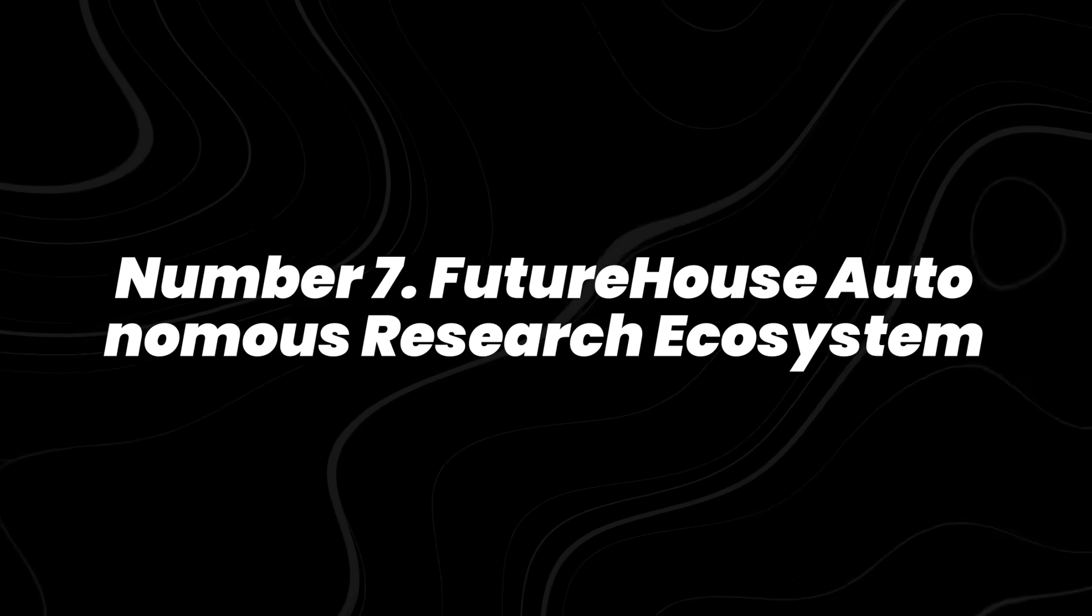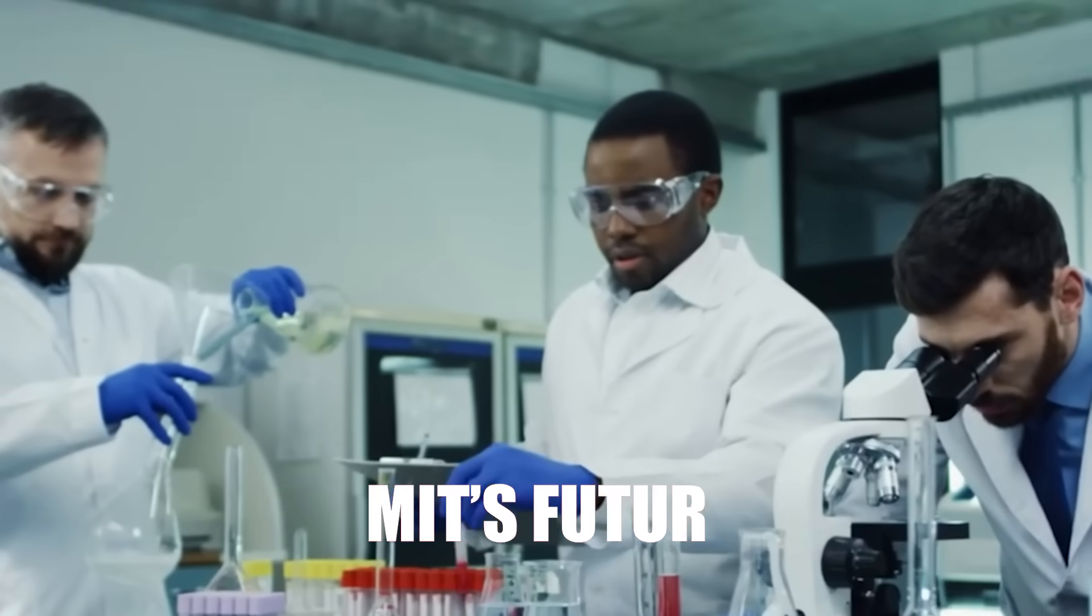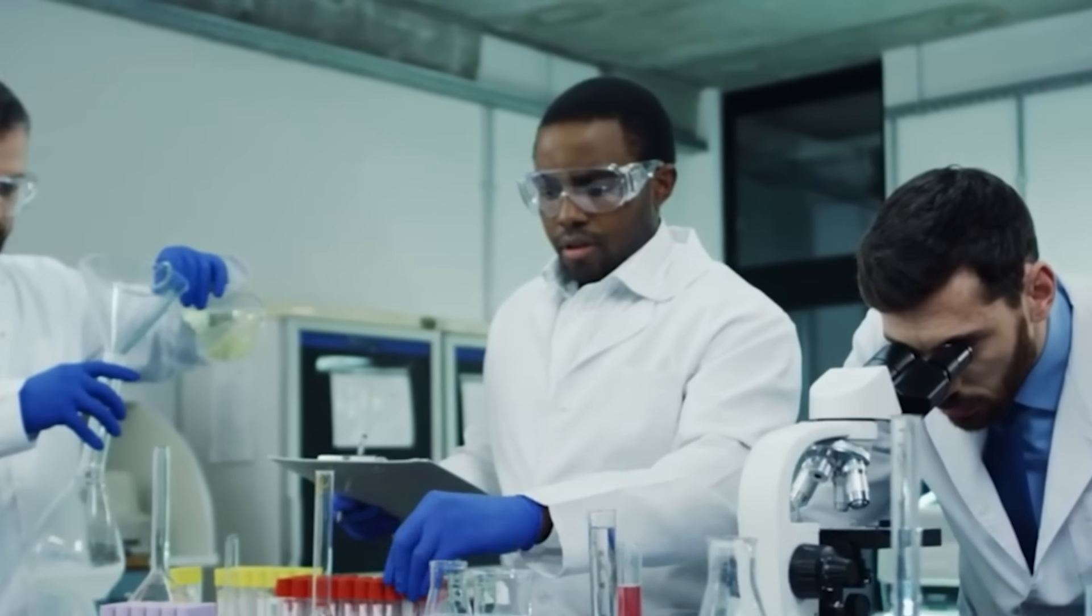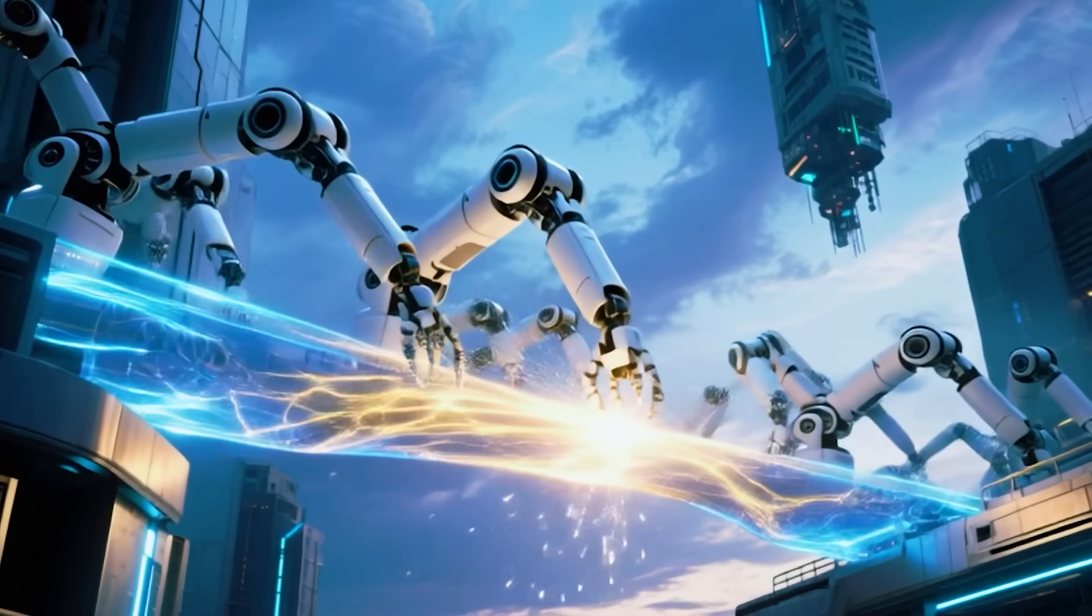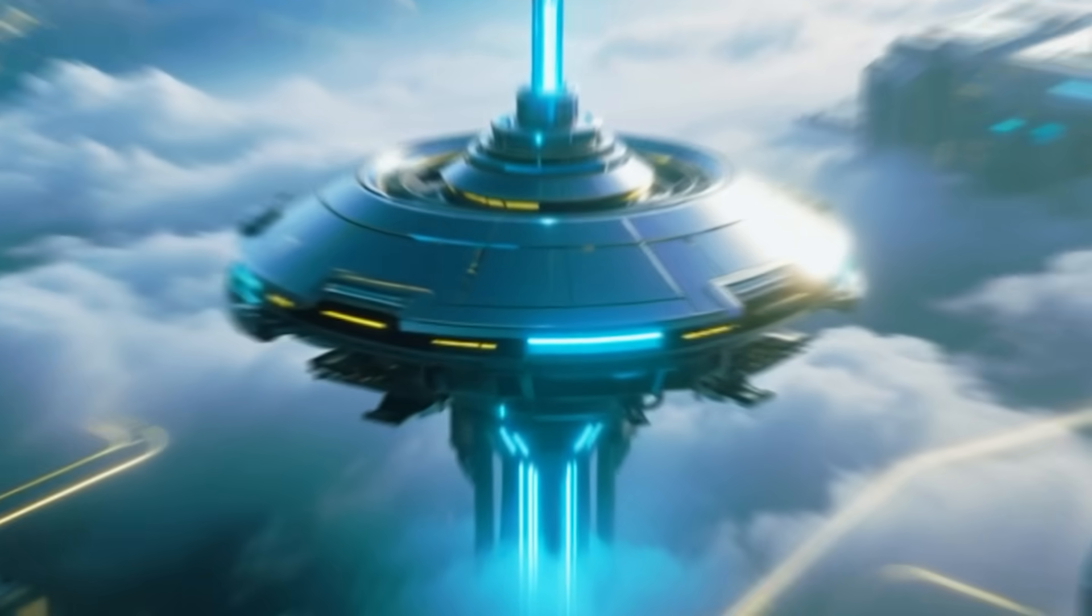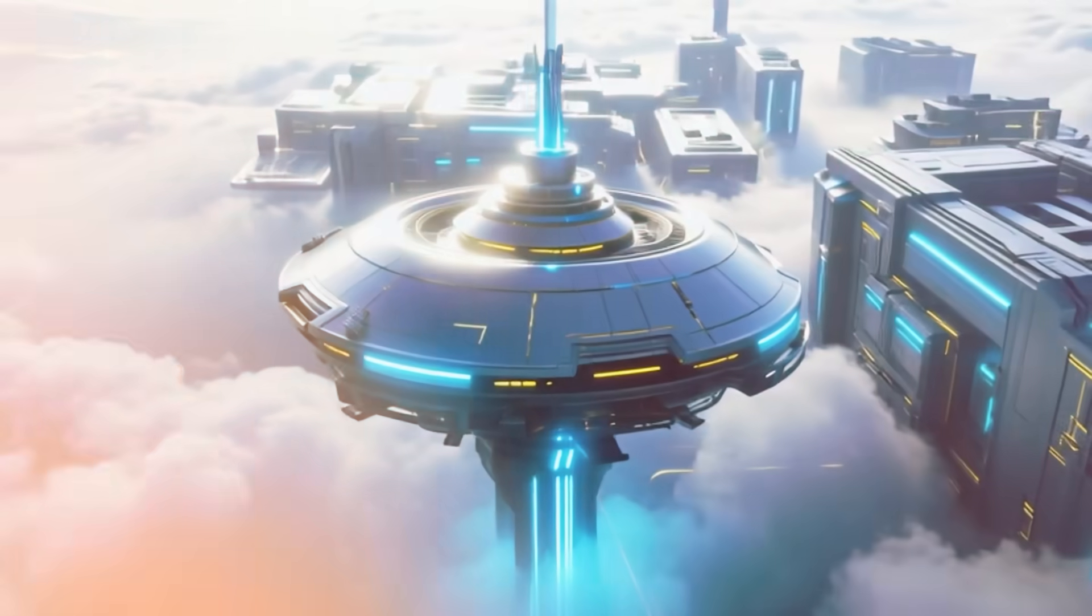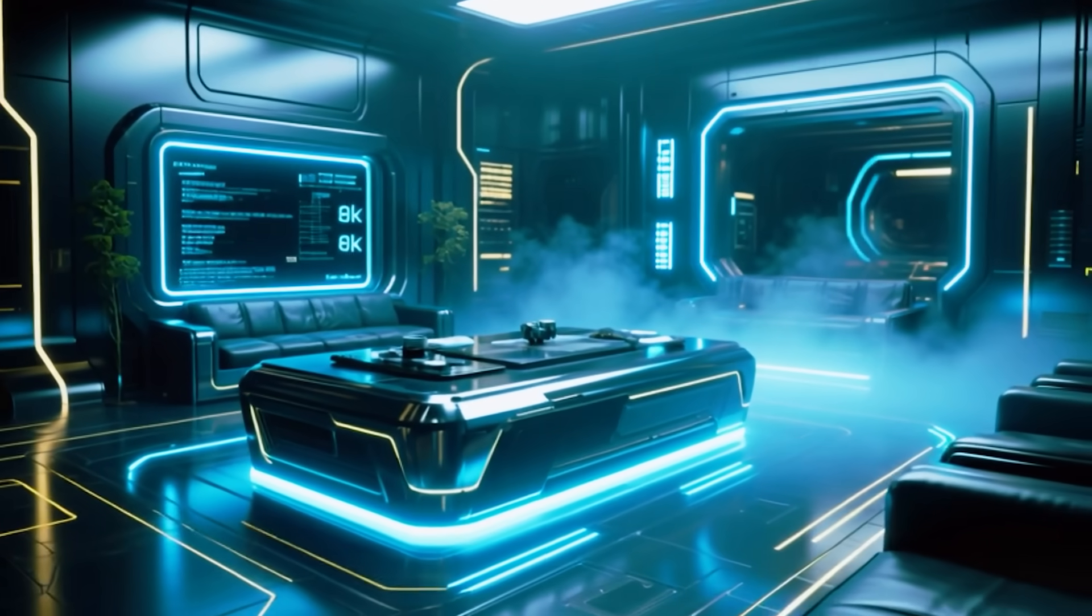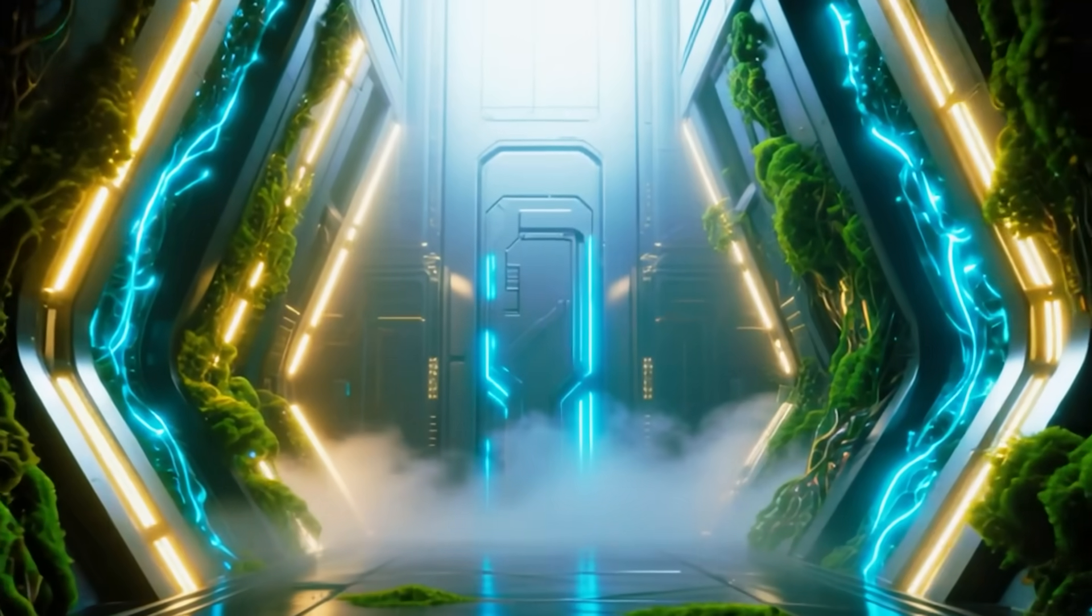Number 7, Future House Autonomous Research Ecosystem. At MIT's Future House, AI isn't just helping scientists, it's running the research loop itself. The lab integrates AI agents that can design experiments, control robotic arms, analyze results, and suggest the next hypothesis in real time. This continuous cycle runs day and night, drastically cutting down the time between discovery and publication.